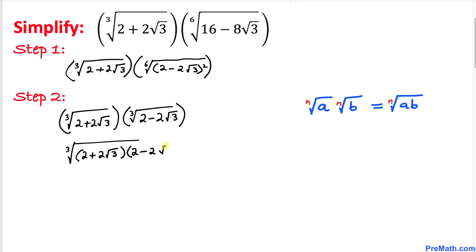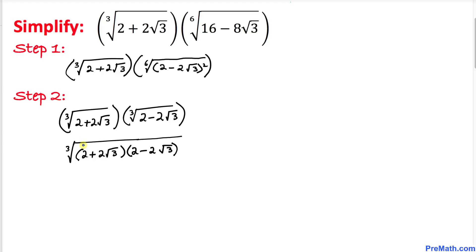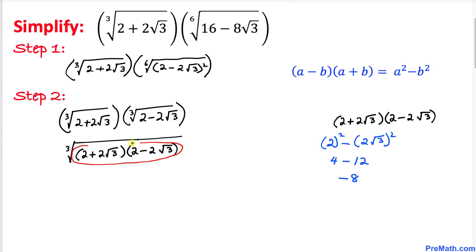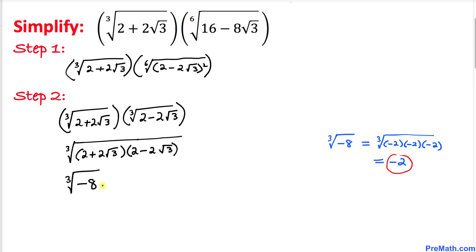Using the rule of radicals, this can be written as the cube root of 2 plus 2 times square root of 3, times 2 minus 2 times square root of 3. Now let's focus on this radicand. We are going to use the well-known difference of squares formula. This becomes 2 squared minus 2 times square root of 3, squared. That is 4 minus 4 times 3, which is 4 minus 12, turning out to be negative 8. So we now have the cube root of negative 8.